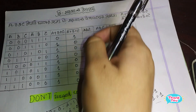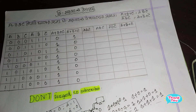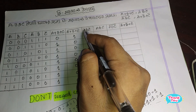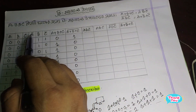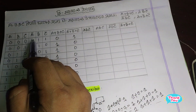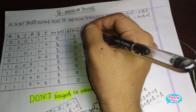A dot B dot C — this is a normal value. If we have 1, then we have 0. A prime, B prime, C prime — that gives us 3, 1.